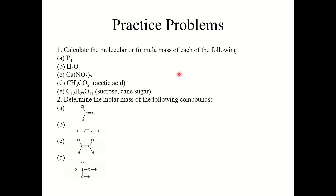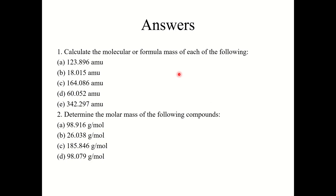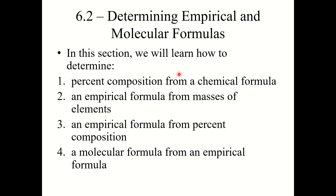That is it for Section 6.1 — it's a really short section. So here are some practice problems for you to try. Pause the video, try a couple from each question, and then the next slide has the answers. Now I'm going to combine Sections 6.1 and 6.2 since Section 6.1 was so short. We're moving into Section 6.2: Determining Empirical and Molecular Formulas. In this section, we will learn how to determine percent composition from a chemical formula, an empirical formula from masses of elements, an empirical formula from percent composition, and finally a molecular formula from an empirical formula.